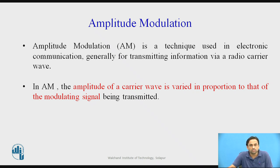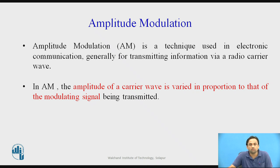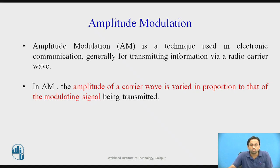Similarly, if you change the frequency of a carrier wave proportional to the amplitude of the modulating signal, keeping amplitude and phase constant, it is known as frequency modulation. Now we will define amplitude modulation: it is generally used for transmitting information via a radio carrier wave. The amplitude of the carrier wave is varied in proportion to the modulating signal being transmitted.